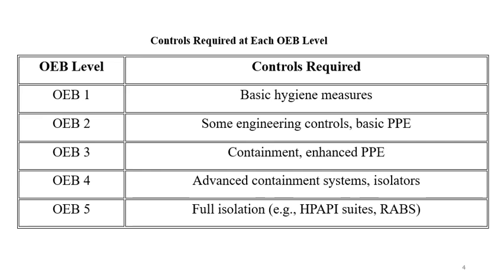Depending on the OEB level, appropriate controls must be in place. OEB1 requires only basic hygienic measures. OEB2 requires some engineering controls such as dust collectors, use of PPEs including personal protective equipment, masks, gloves, and eye protection.